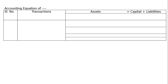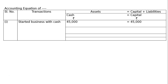Started business with cash: in the asset side, cash will increase, and on the right-hand side, capital will increase. LHS is equal to RHS — cash and capital with rupee symbols. Cash will increase by rupees 45,000 and capital will be increased by 45,000.